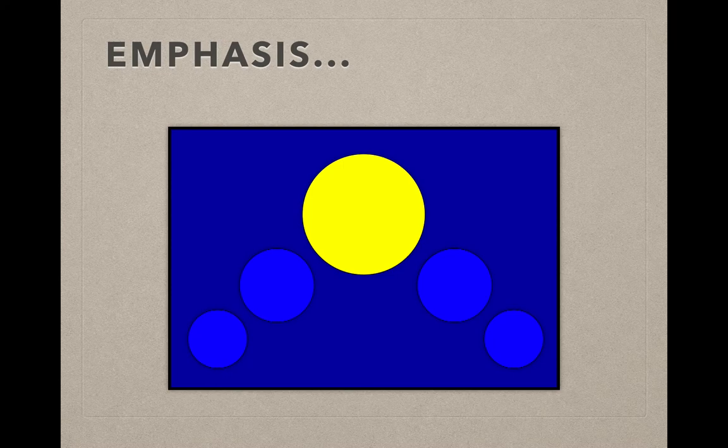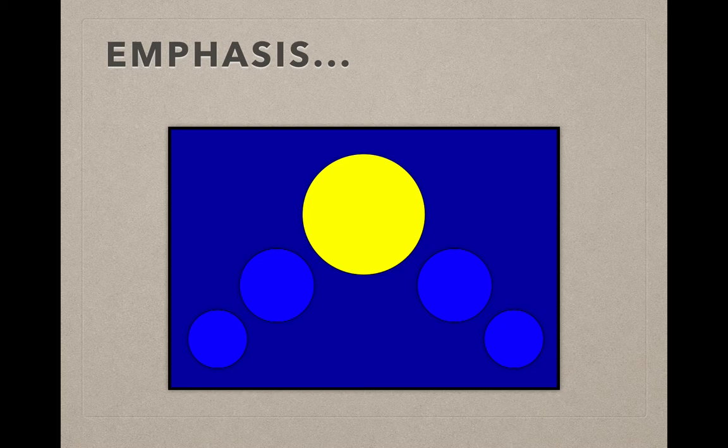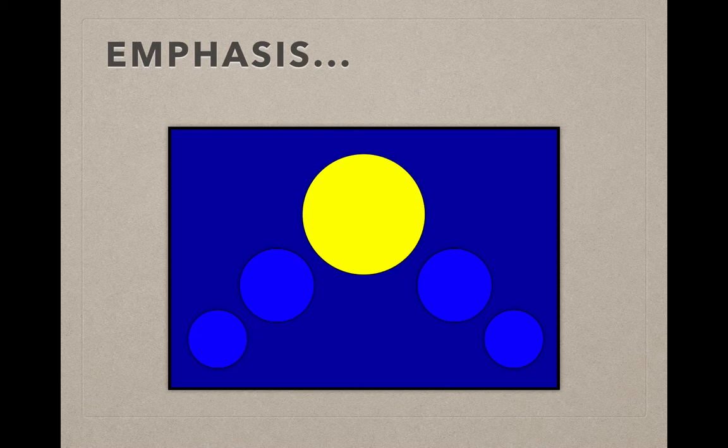As your eye trails to a corner, it comes back up to the yellow circle. Again, you don't have a choice but to look at that yellow circle because I haven't given you a choice of anything else to look at. So making something stick out is what we're dealing with in emphasis.